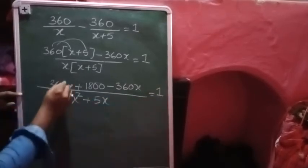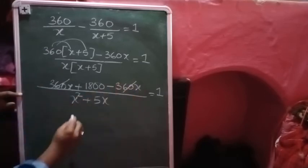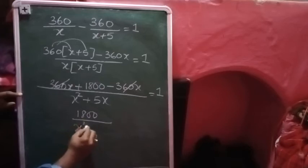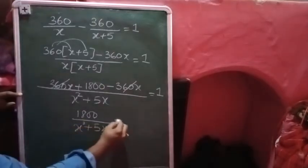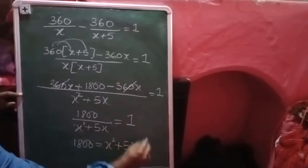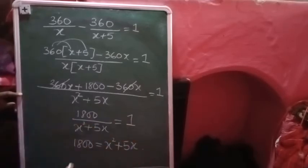Now here plus 360 x minus 360 x get canceled. It becomes 1800 divided by x square plus five x, which equals to one. Let us shift these two terms to that side. So it becomes 1800 equals to x square plus five x. Let me arrange in proper form: x square plus five x minus eighteen hundred, which equals to zero.